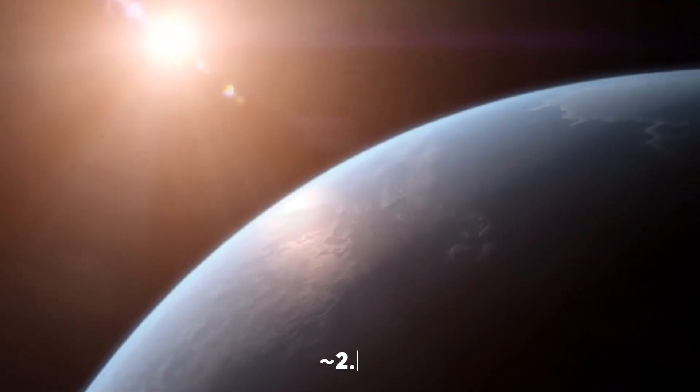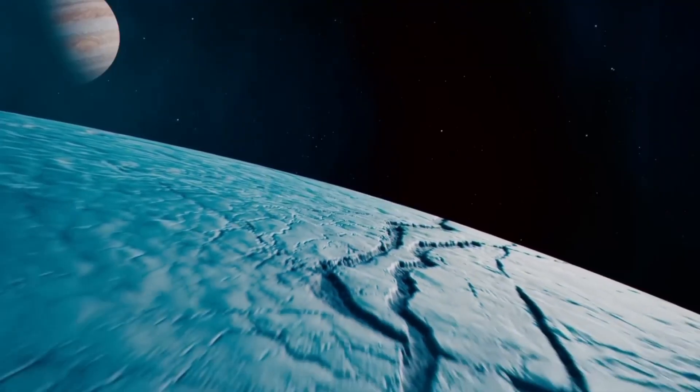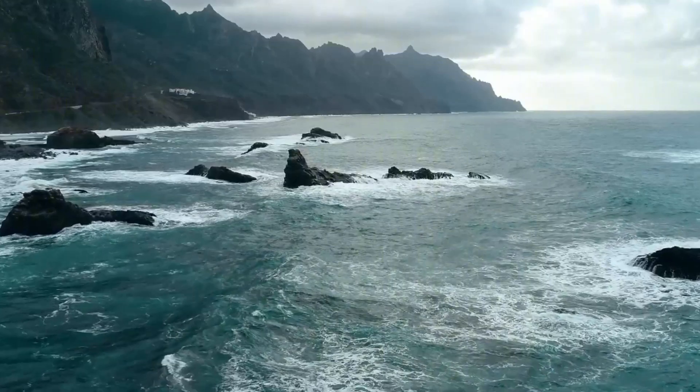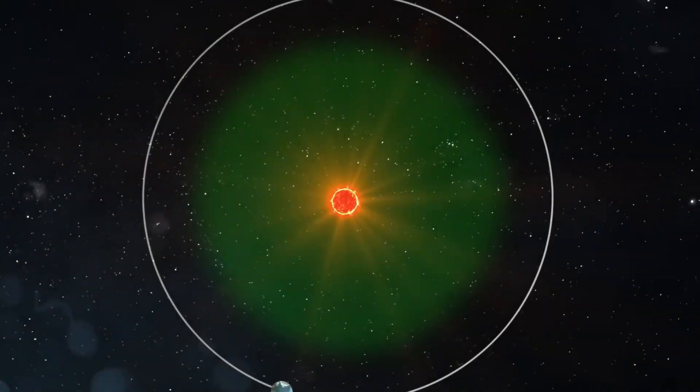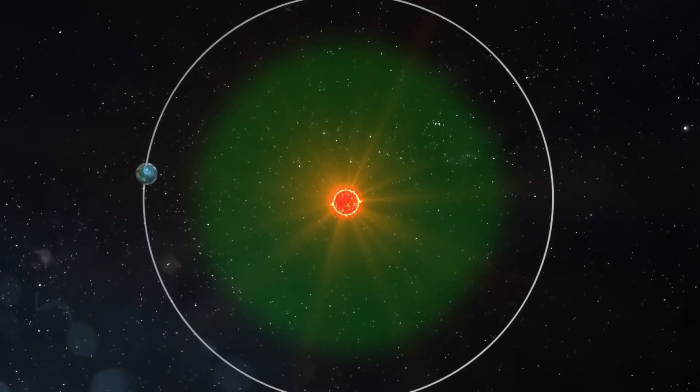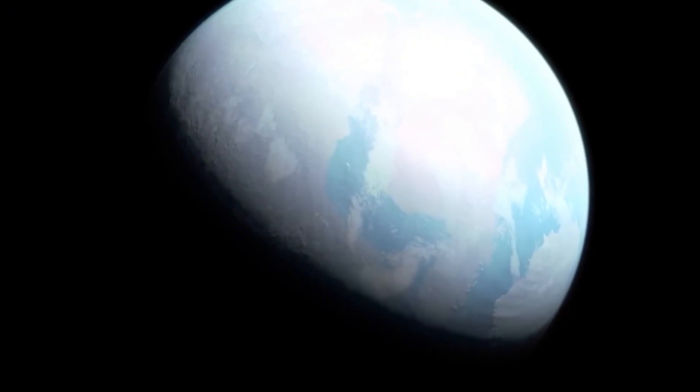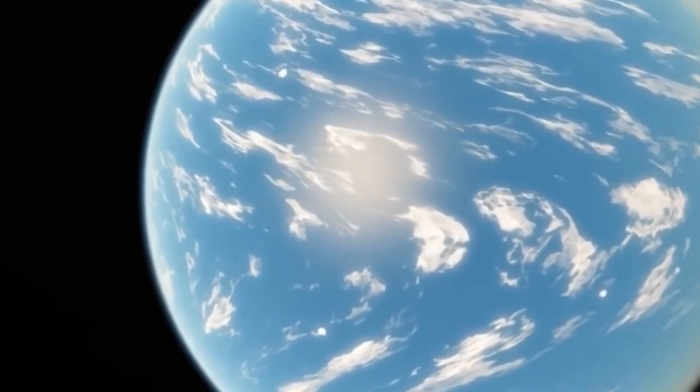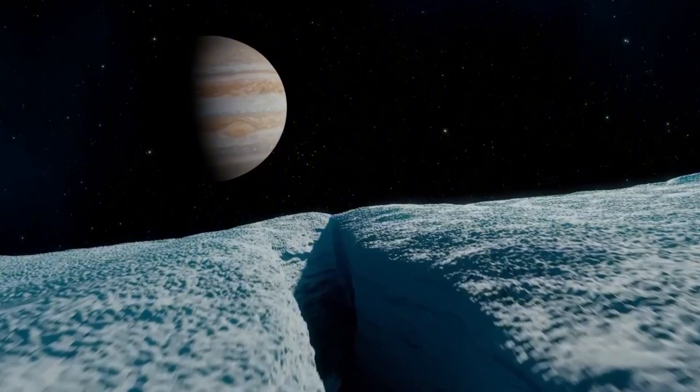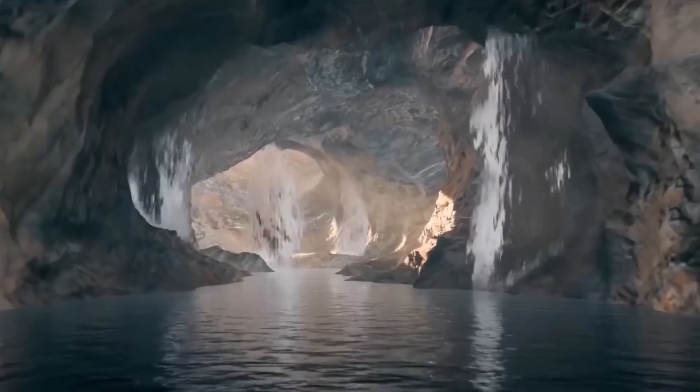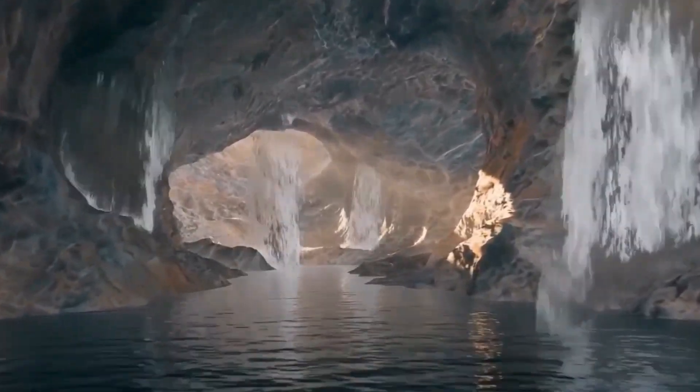GJ-1214b is another super-Earth, about 2.7 times the size of our planet. It orbits a red dwarf star, about 40 light-years away. And it's become one of the most studied exoplanets for a simple reason. It might be our best chance to understand a completely new class of planet. You see, GJ-1214b doesn't fit neatly into any of our existing categories. It's too big to be a rocky planet like Earth, but too small to be a gas giant like Jupiter. Instead, it seems to be something in between, what astronomers call an ocean planet.